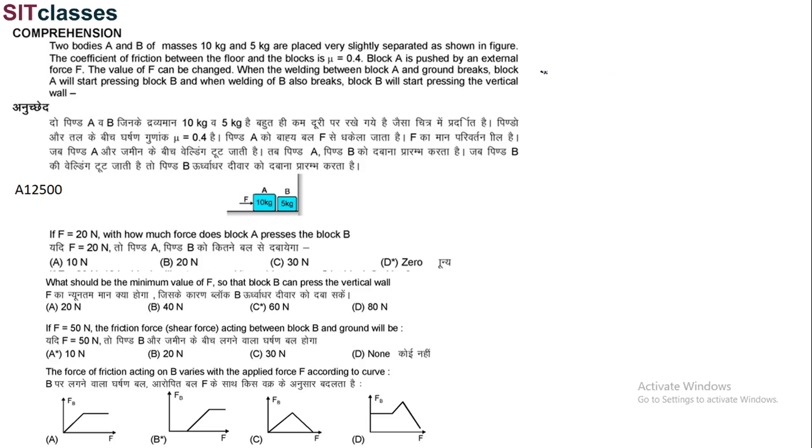So first of all, this is the ground, here is block A, and here is block B, and here is the vertical wall. If the mass is 10 kg, there is a 100 N force in this direction. Block B has mass 5 kg, so there is a 50 N force in this direction.